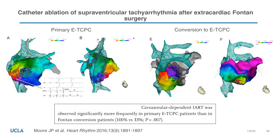We also looked at the types of substrates in these patients in a multi-center study. The major finding was that with primary childhood extracardiac conduit Fontans, circuits tend to be quite simple around the AV valve annulus or around an atriotomy, similar to what we see with other forms of congenital heart disease. Whereas after conversion to an extracardiac Fontan with arrhythmia surgery, the circuits are much more complex and more challenging to map and ablate.